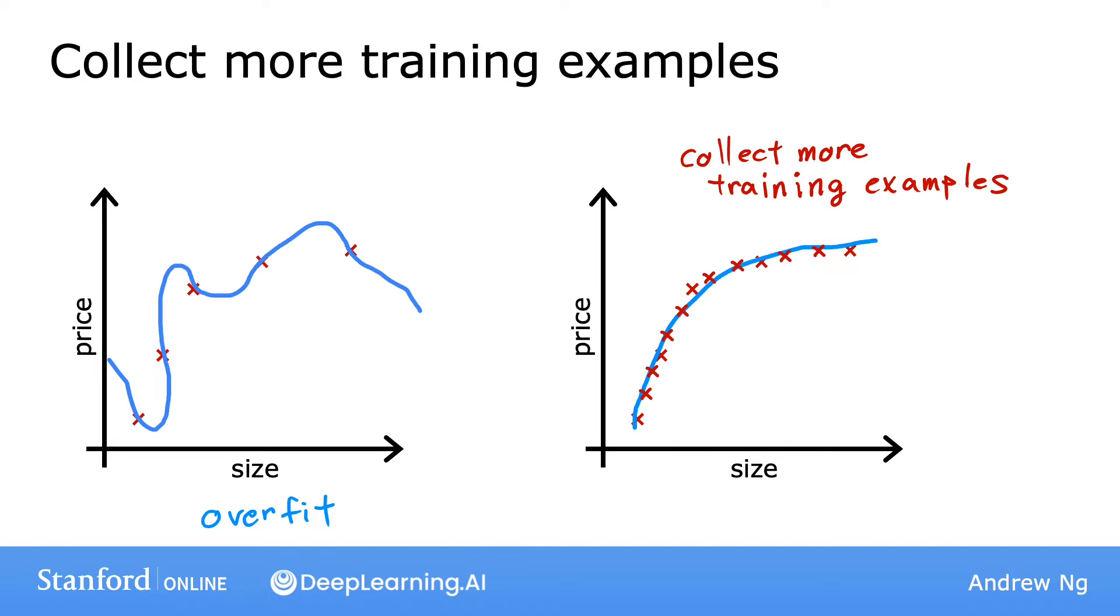Now, getting more data isn't always an option. Maybe only so many houses have been sold in this location, so maybe there just isn't more data to be had. But when the data is available, this can work really well.